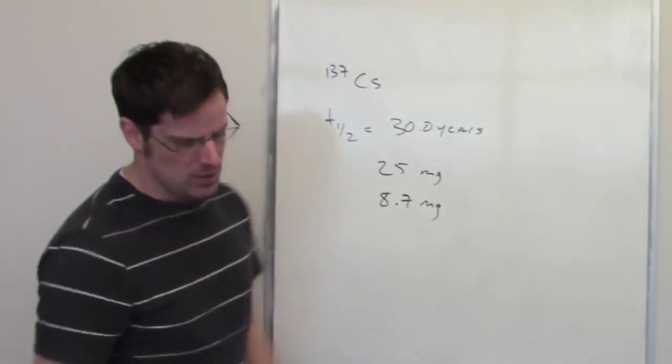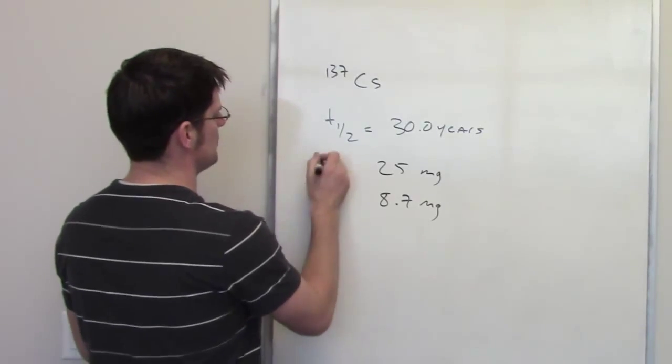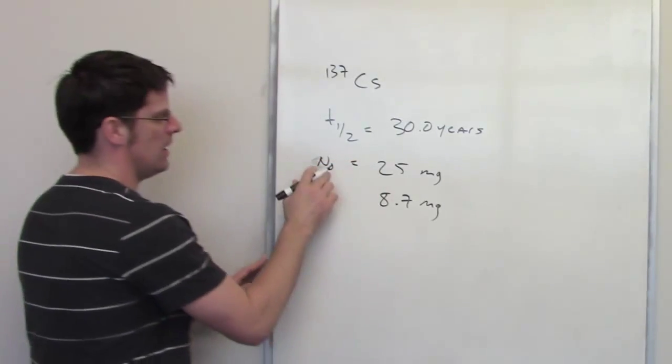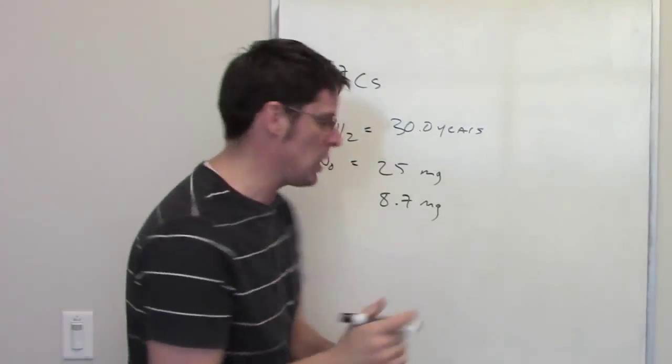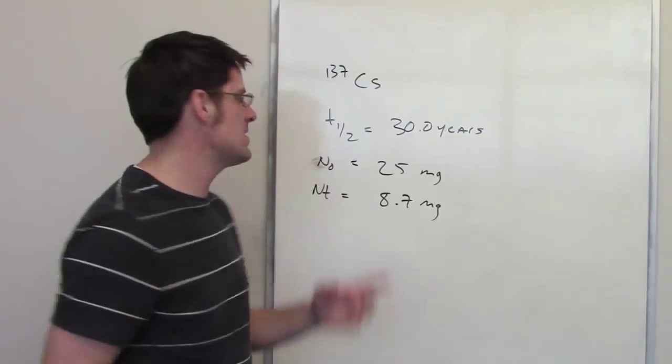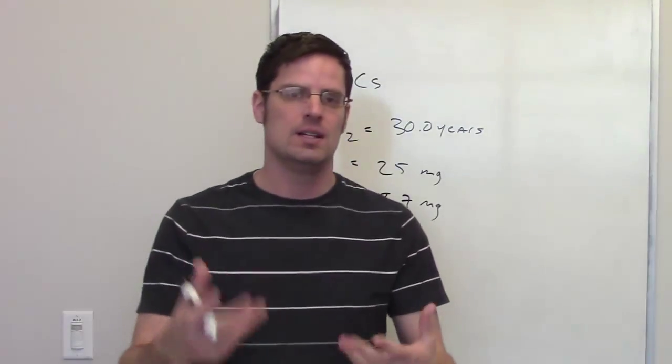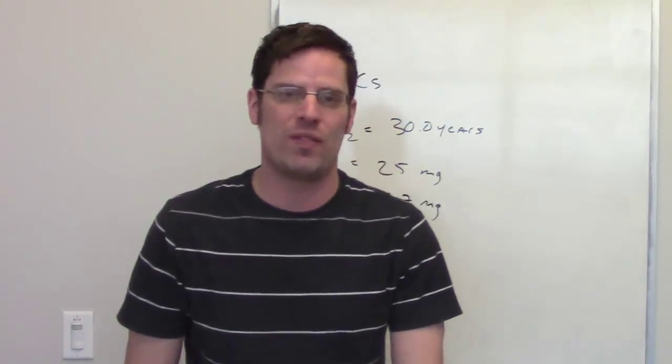What are these amounts? Well, these amounts are actually equal to n sub 0, that's the amount that you have at time equals 0, and then it's n sub t, that's the amount that you have at time equals t, in this case some amount of time. We don't know what that is.